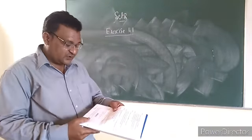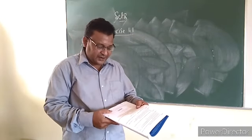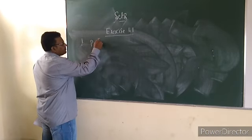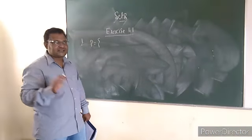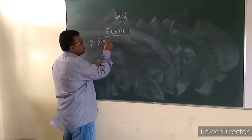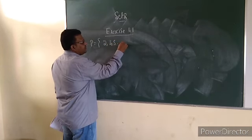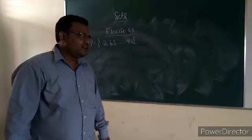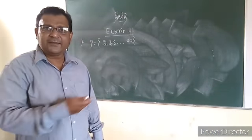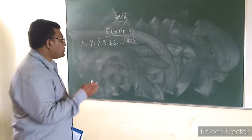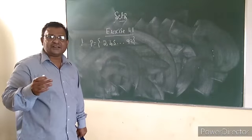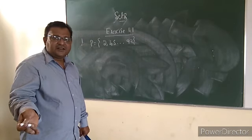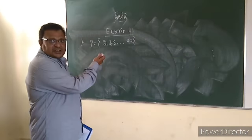The first one is: collection of all prime numbers less than 100. What are those? 2, 3, 5, and so on, less than 100. Here it is well-defined — prime numbers are clearly defined. And moreover, it is distinct also. According to the definition of a set, a collection of well-defined distinct objects is a set. Yes, it is a set.